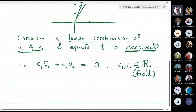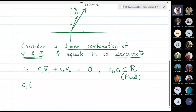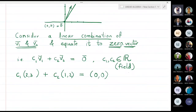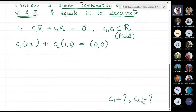So c1 and c2 are scalars and they belong to the field R, meaning they are real numbers. Now I will write the two vectors: c1 times vector v1 which is (1,2), plus c2 times vector v2 which is (2,3), equal to the zero vector (0,0). Now I will try to find the values of c1 and c2.